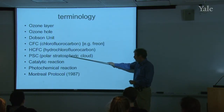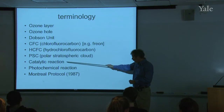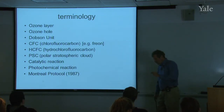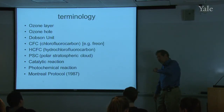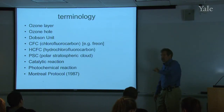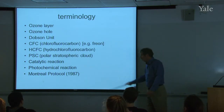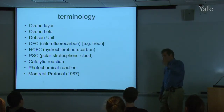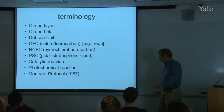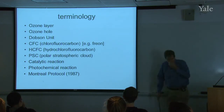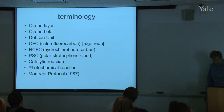We'll talk about polar stratospheric clouds and catalytic reactions, which are reactions in which one particular chemical compound allows the reaction to go forward but isn't itself changed — so it can be reused over and over again. Photochemical reactions require photons of light for the reaction to go forward. And we'll talk about the Montreal Protocol. All this will come in turn today.